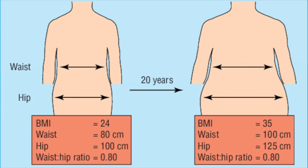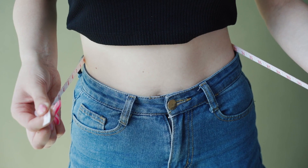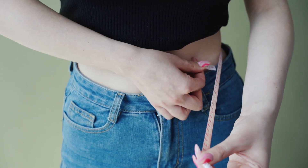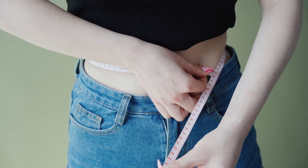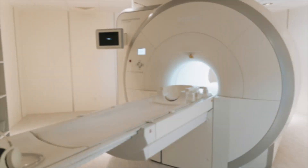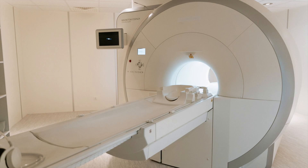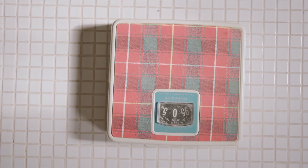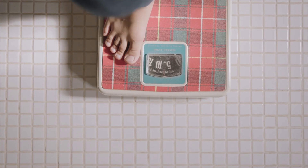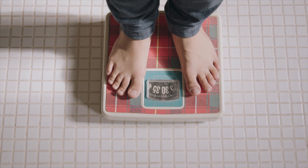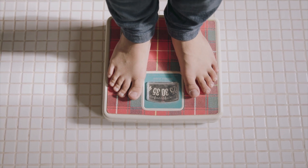The waist-to-hip ratio is also used sometimes as a measure of health — it is the ratio of the circumference of the waist to that of the hips, calculated as waist measurement divided by hip measurement. Apart from these, MRI scans and underwater body measurements are also used to give a more detailed health report. BMI is a measure of one aspect of a person's health, so while it can be helpful, it should not be the only way to understand the human body.